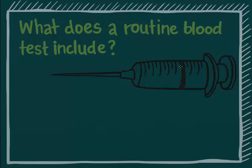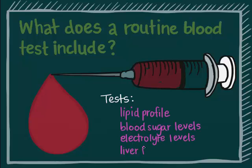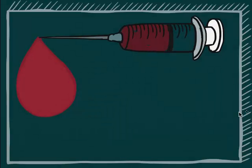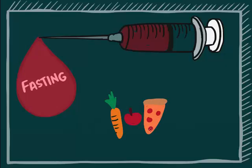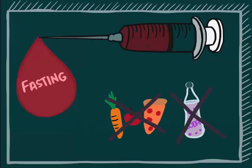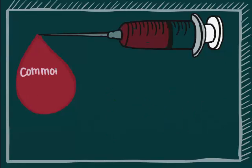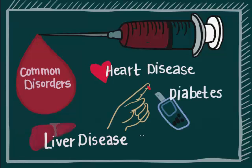What does a routine blood test include? Blood tests include many different types of tests for different purposes, such as lipid profile, blood sugar level tests, electrolyte levels, and liver function tests. It is usually done with fasting blood — that is, no foods or drinks except water for more than 8 to 12 hours before the blood draw. It includes tests for risk factors for common disorders such as heart disease, diabetes, liver disease, and kidney disease, among others.